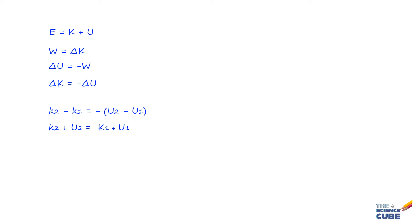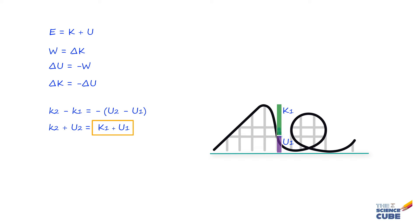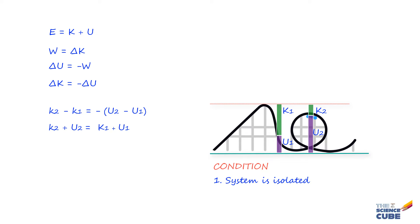And what this equation tells us is that the sum of kinetic energy and potential energy at any point of time is equal to the sum of kinetic energy and potential energy at any other point of time. But we have to remember that this equation holds true only when the system is isolated and the forces acting are conservative in nature.